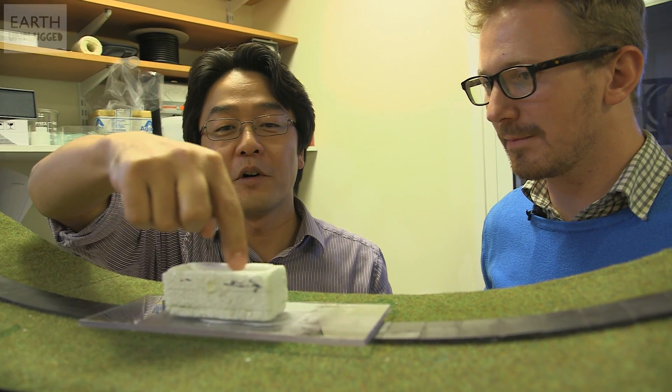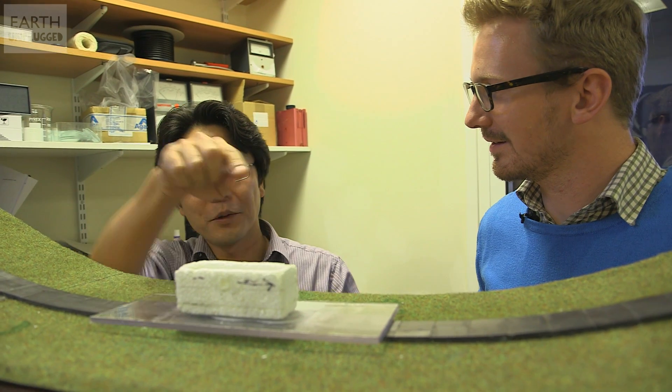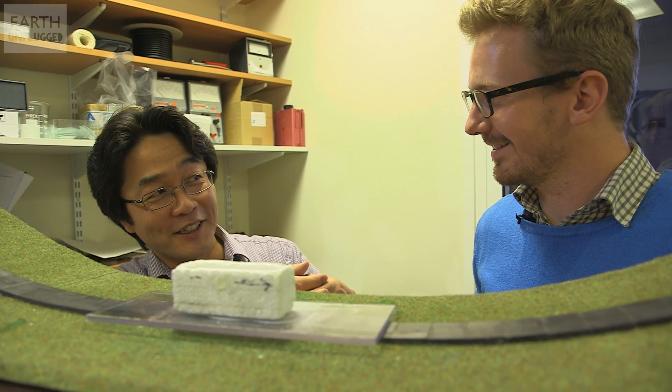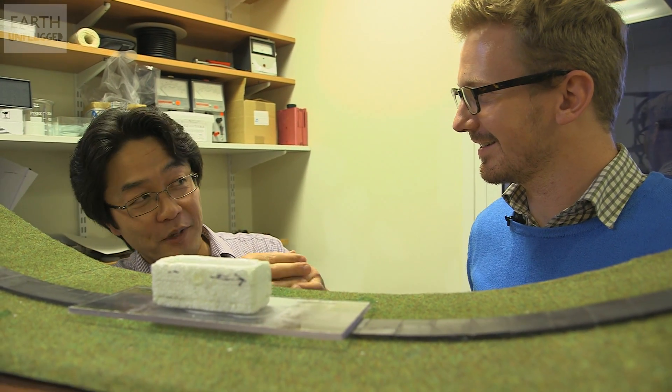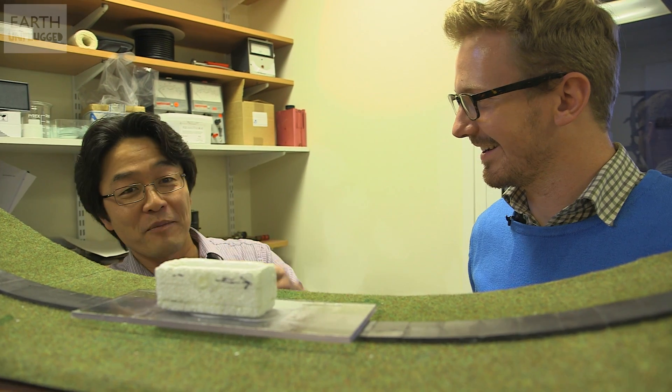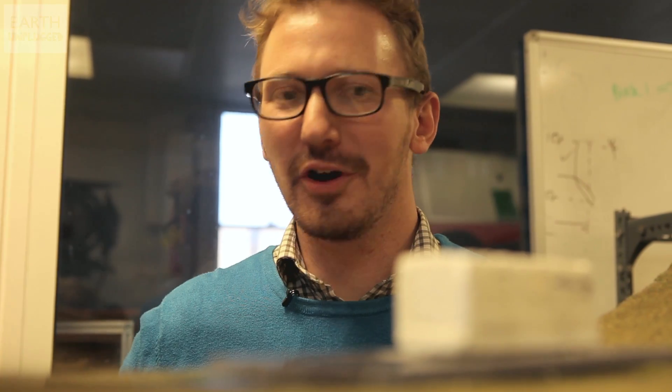So what we're going to do is we're going to pour liquid nitrogen in this tank here. That's going to cool the pieces of superconductor so that they become superconducting and then they're going to trap that magnetic field.